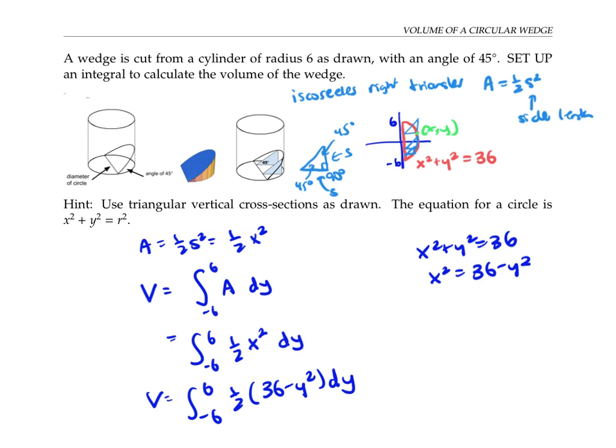If we prefer, we could also set up the integral as the integral from 0 to 6 of one-half times 36 minus y-squared dy, and then double it, because the symmetry of the figure means we could just take the volume of the top half and multiply it by 2. If we write it this way, then the integral simplifies to the integral from 0 to 6 of 36 minus y-squared.